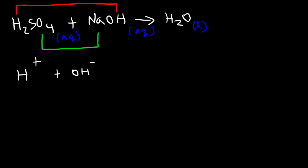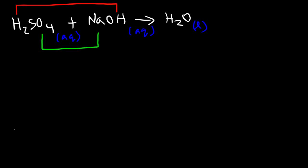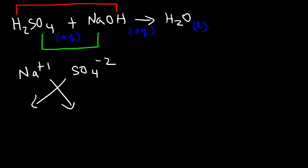What about pairing up sodium and sulfate? Sodium has a positive 1 charge and sulfate has a minus 2 charge. We need two sodium ions to match up the negative 2 charge of the sulfate ion — or we can use the crisscross method. So it's going to be Na₂SO₄, which is the chemical formula of sodium sulfate.